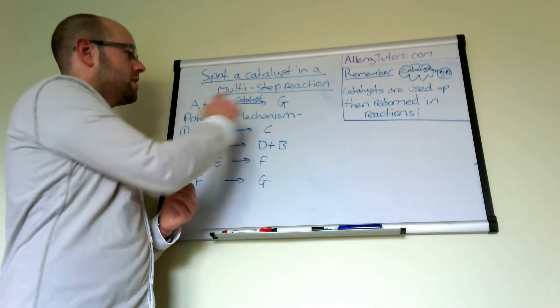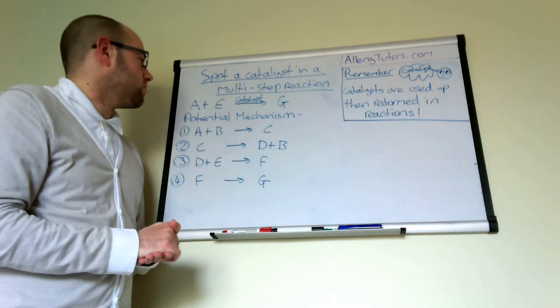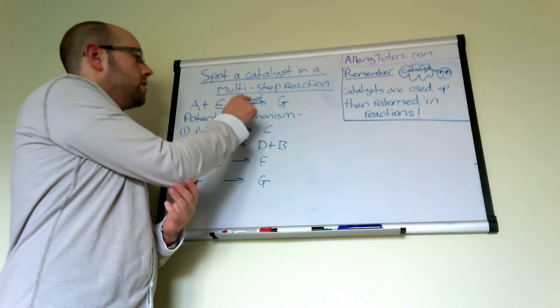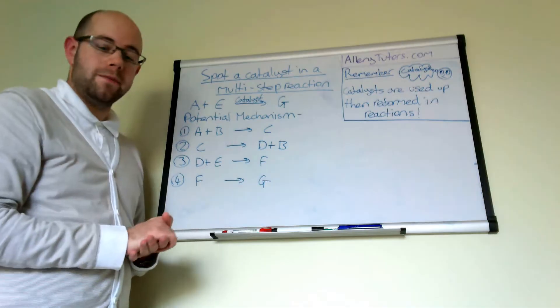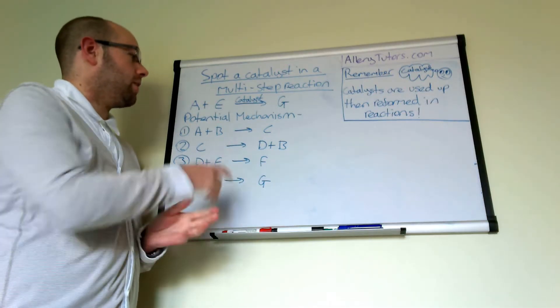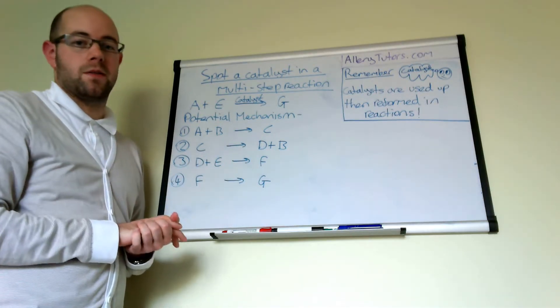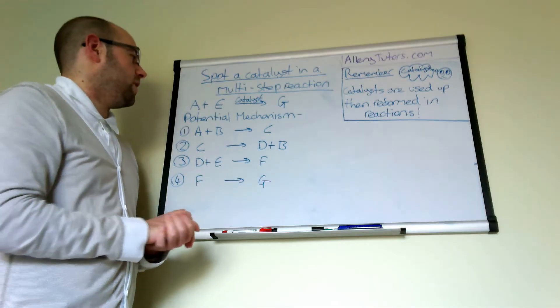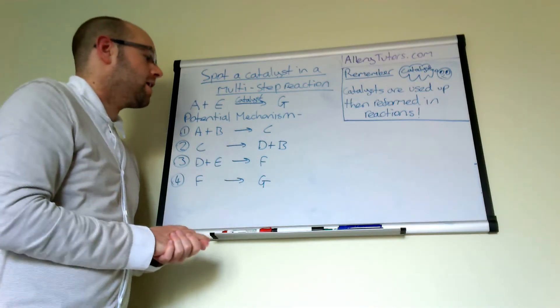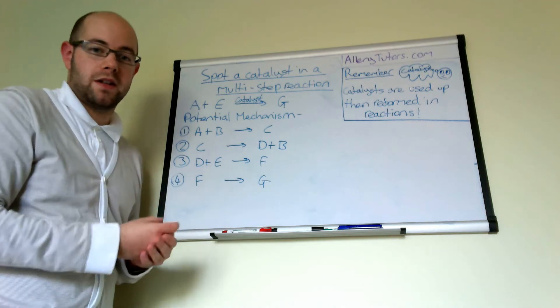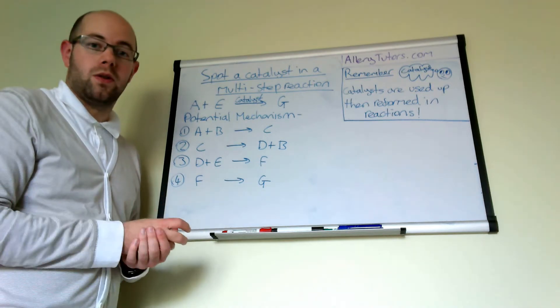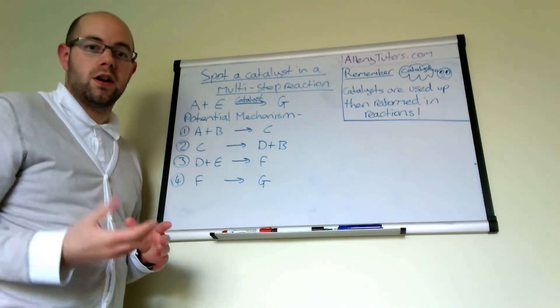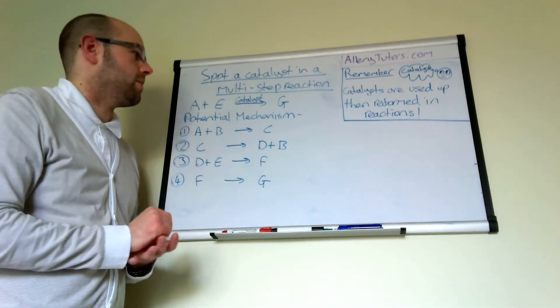So I've got an example of an equation here. The equation is A plus E with a catalyst will form G, and we have a potential mechanism that I've written down here. You can see there's letters in there that don't always appear in here, and some of them new letters are either catalysts or they're actually just intermediates which are used up during the actual multi-step reaction.